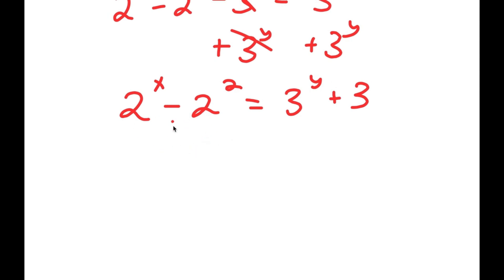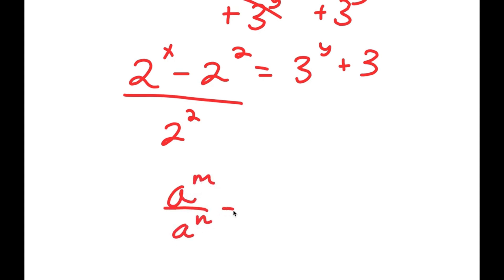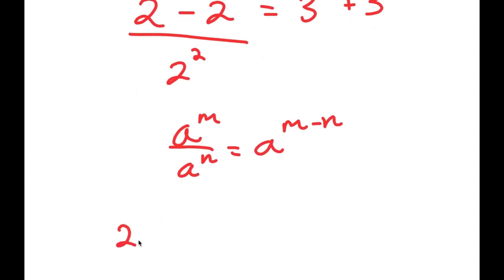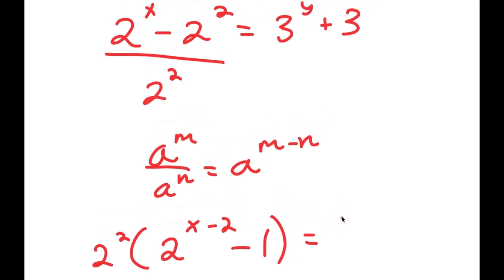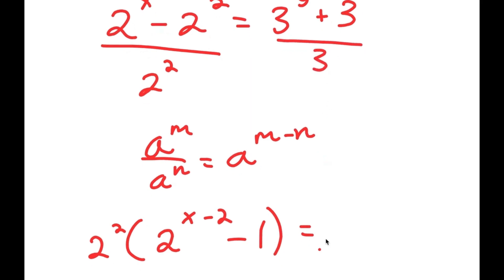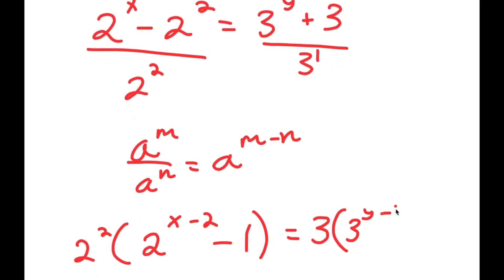For my left-hand side, I'm going to divide by 2 squared. So 2 to the power of x divided by 2 squared — using the rule that a to the power of m over a to the power of n equals a to the power of m minus n — gives 2 to the power of x minus 2. Then 2 squared divided by 2 squared is 1. On the right side, I divide by 3: since 3 is 3 to the power of 1, I get 3 to the power of y minus 1, and 3 divided by 3 gives plus 1.